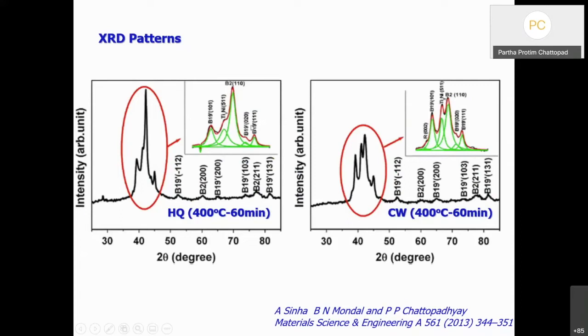As happened for the age-hardened sample, similarly we find the intensity of the B2 phase is higher in the case of the homogenized quenched sample than in the cold work sample.